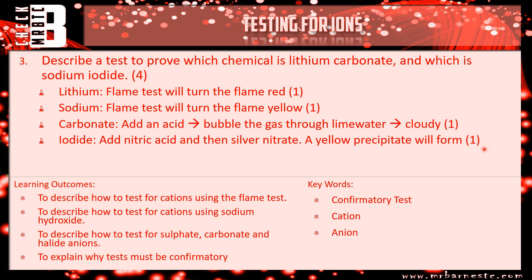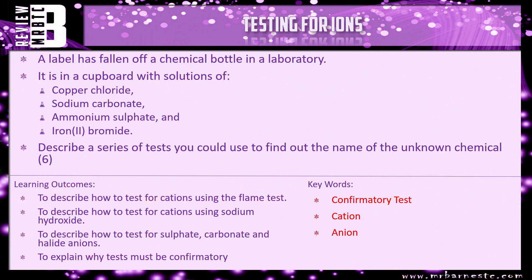And that really is everything you need to know. The review question says a label has fallen off a chemical bottle in a laboratory, and it is in a cupboard with solutions of copper chloride, sodium carbonate, ammonium sulphate, and iron 2 bromide. Describe a series of tests you could use to find out the name of your unknown chemical. What's the test for copper? What's the test for chloride? And so on — one test for each and that's going to get you your six marks.